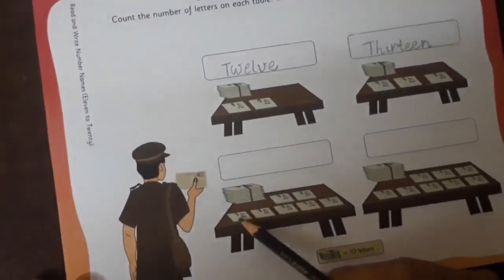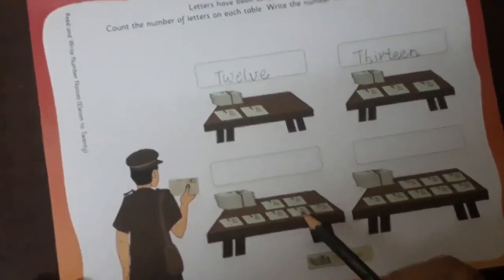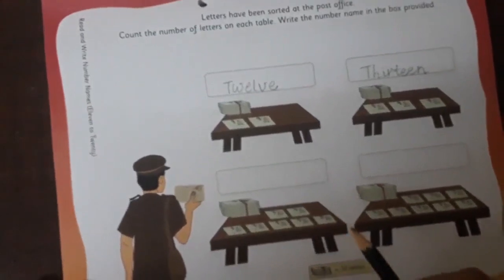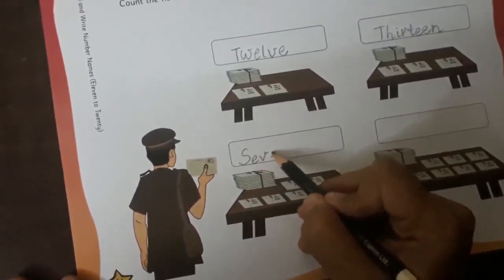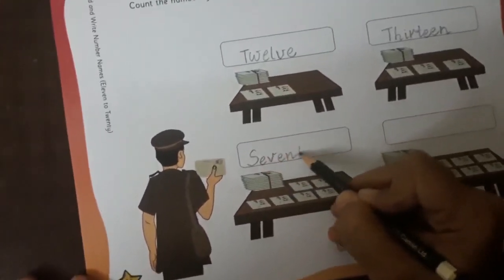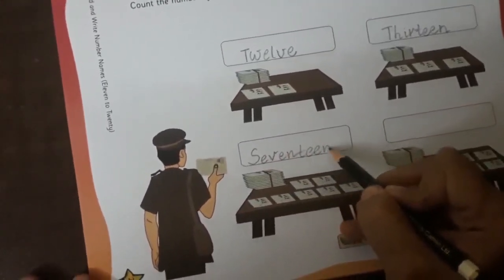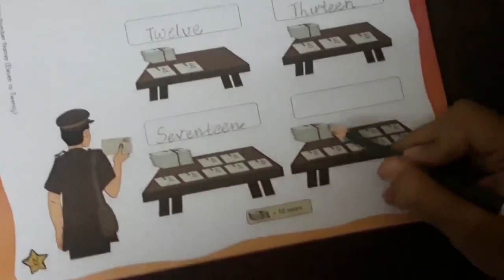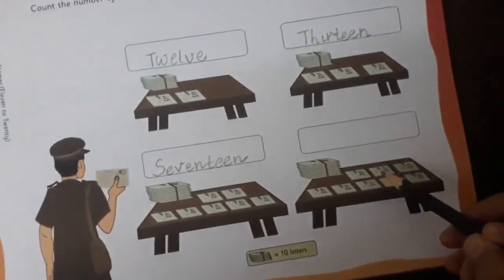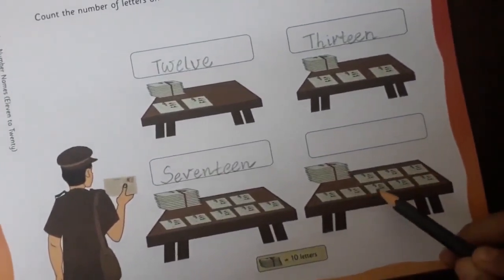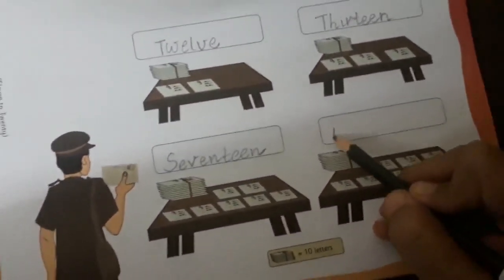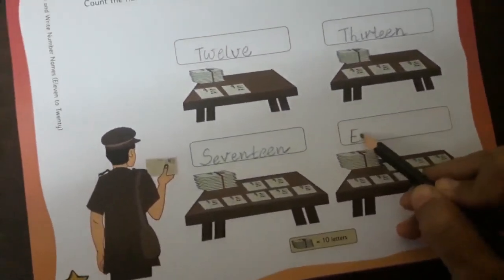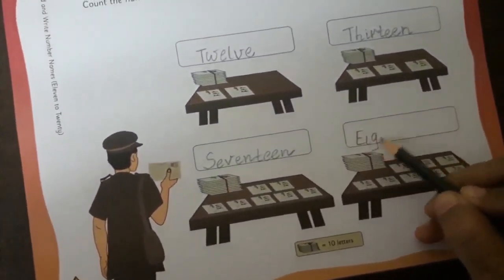Now here, bundle of 10, 11, 12, 13, 14, 15, 16, and 17. So we are going to write the number name of 17: S-E-V-E-N-T-E-E-N, 17. Now here, bundle of 10, 11, 12, 13, 14, 15, 16, 17, and 18. So we are going to write the number name of 18: E-I-G-H-T-E-E-N.